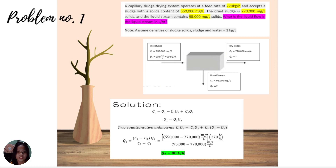What is the liquid flow in the liquid stream in liters per hour? Note: assume densities of sludge and water equal to 1 kg per liter.